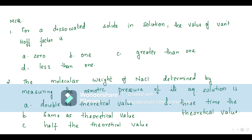Normal has to be more than the observed colligative property. These are the questions you can expect, especially when higher-order thinking questions are involved. The last fill-in-the-blank type of question — that has to be our focus. Now, MCQs.